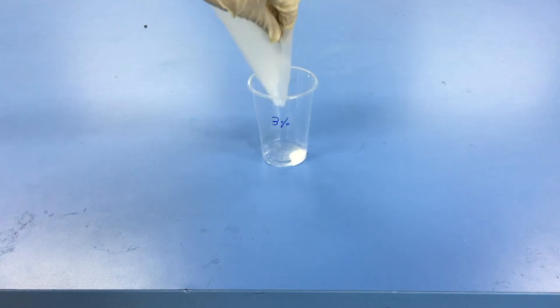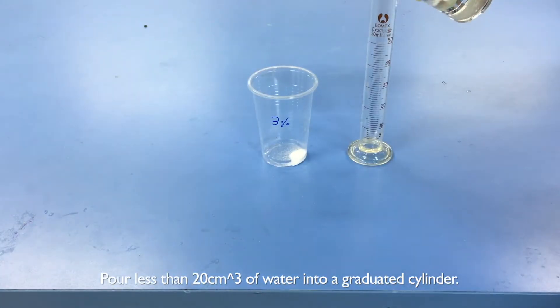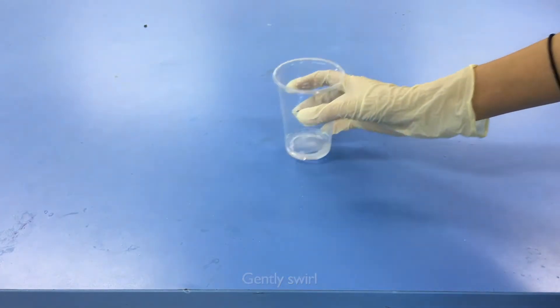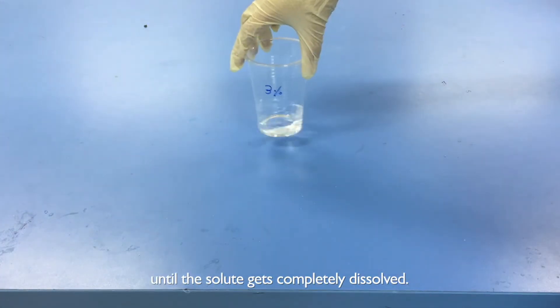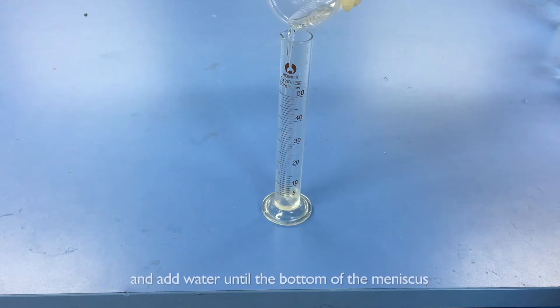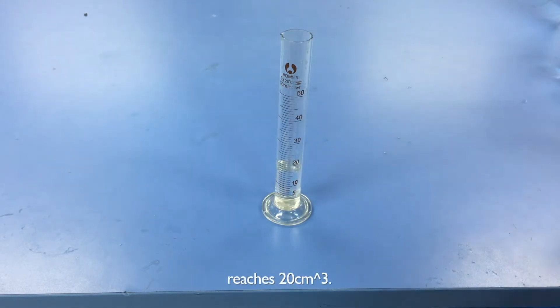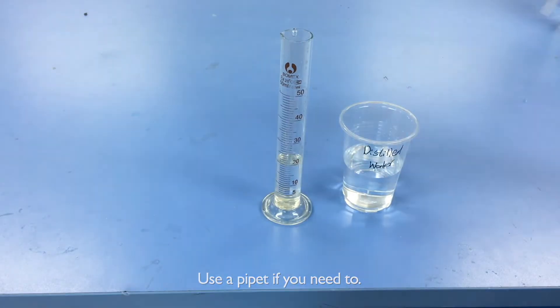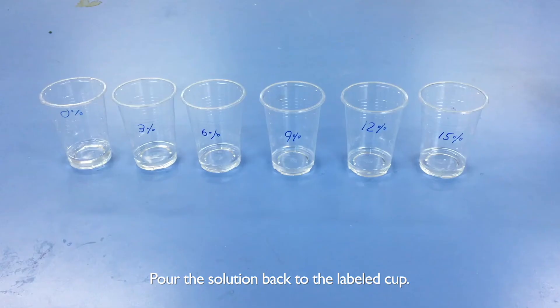Pour the sucrose into the labeled cup. Pour less than 20 cubic centimeters of water into a graduated cylinder. Gently swirl until the solute gets completely dissolved. Pour the mixture back into the cylinder and add water until the bottom of the meniscus reaches 20 cubic centimeters. Use a pipette if you need to. Pour the solution back to the labeled cup.